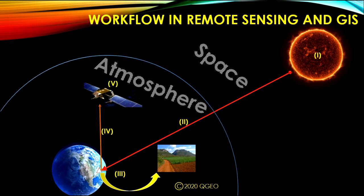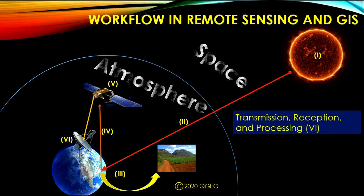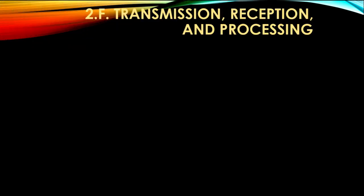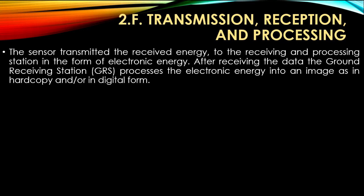Transmission, reception and processing in the workflow of remote sensing: the sensor transmits the received energy to the receiving and processing station in the form of electronic energy. After receiving the data, the ground receiving station (GRS) processes the electronic energy into an image, either in hard copy and/or in digital form.